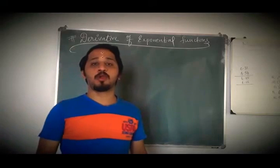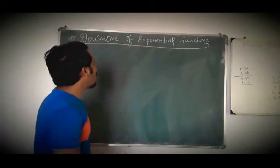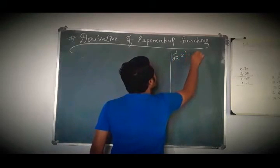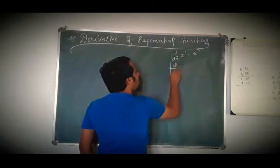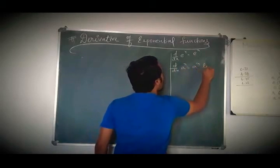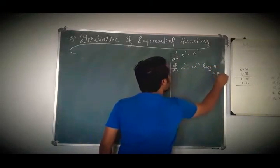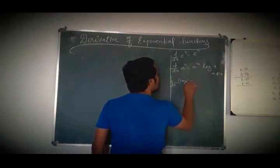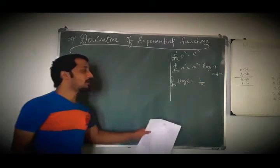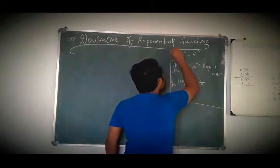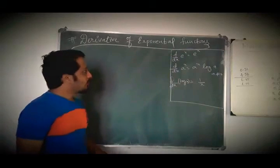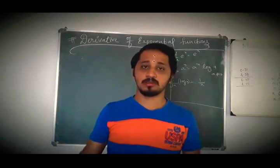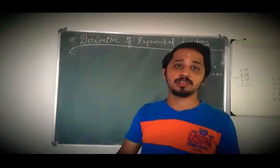Derivatives of exponential functions we are going to discuss in this episode. Before entering into this episode, we know the formulas. Derivative of e^x is e^x. Derivative of a^x is a^x · log a, where a is not equal to 0. Derivative of log x is 1/x. These are the three formulas we should know in this session. Directly we are entering into the problems — total 13 problems we are going to discuss in this session on derivatives of exponential functions.